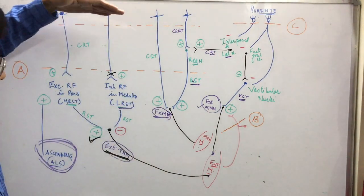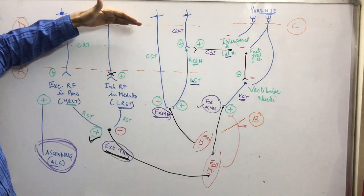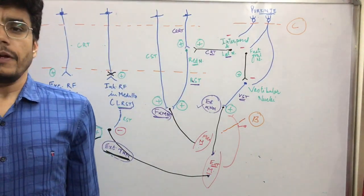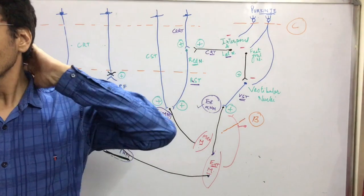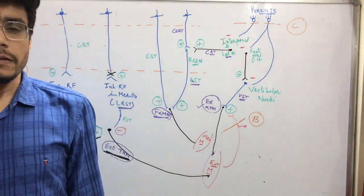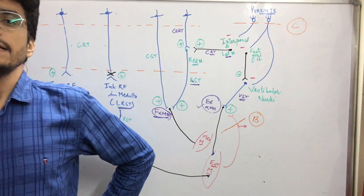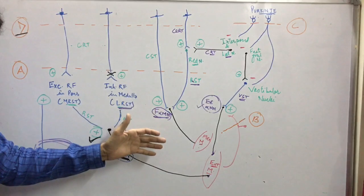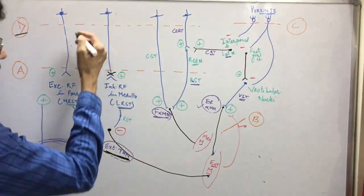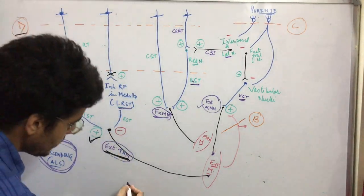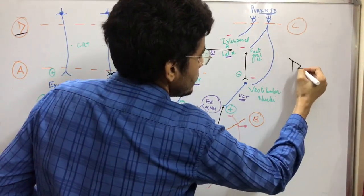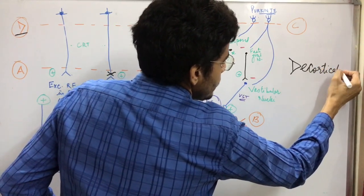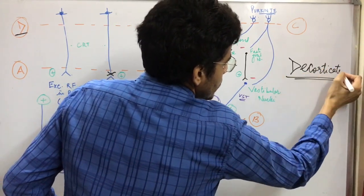So a person suffering from this level of damage will have extensor rigidity overall. The appearance of the person will be like this: neck extended, arm extended, back extended, as well as legs extended. That kind of rigidity is called decorticate rigidity — decorticate means we have removed the cortex connection.